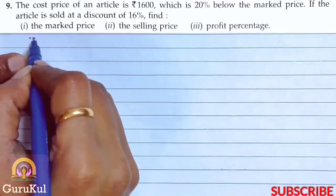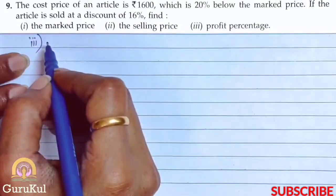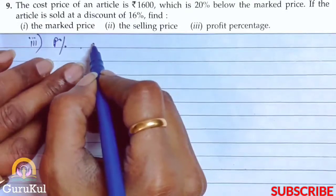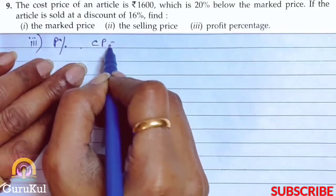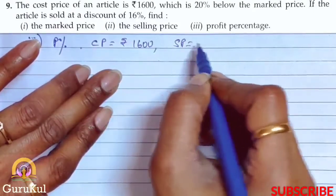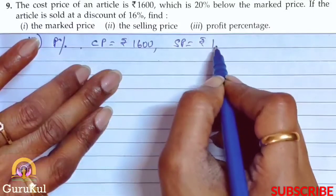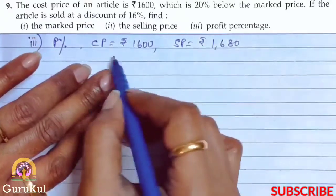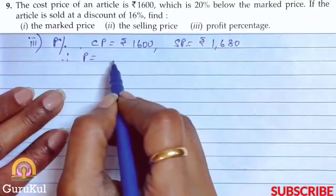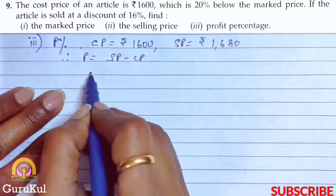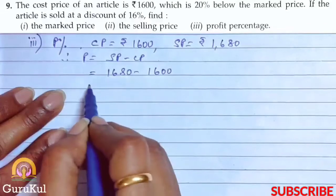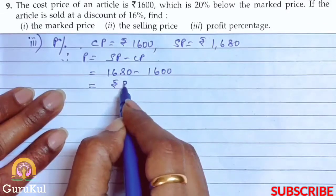Now the third part of question number 9 — we need to find the profit percentage. CP was rupees 1600 and SP was rupees 1680. We can see that a profit has been made. Therefore profit equals SP minus CP, which is 1680 minus 1600, giving us rupees 80.